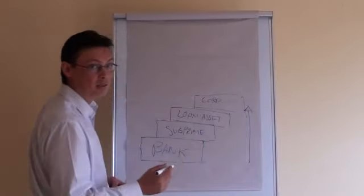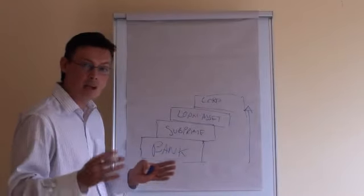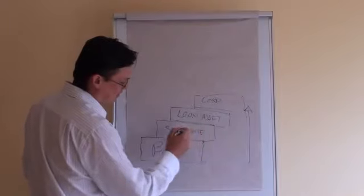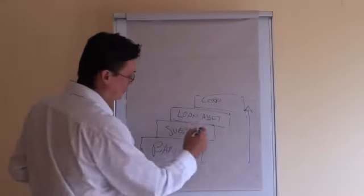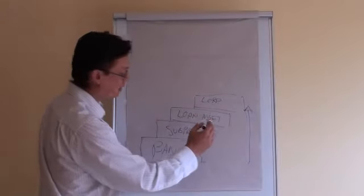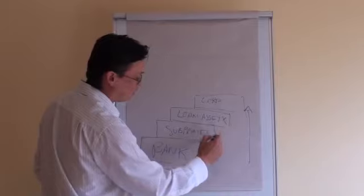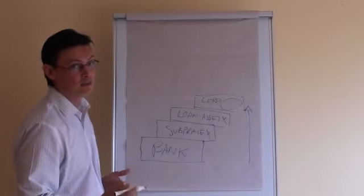So when the subprime was triggered, or when the dates were triggered where people actually had to pay the long term loan rates, they found out they actually couldn't afford them. So in effect, these subprime products were worth nothing. However, we've sold those subprime products as assets, so these were worth nothing. And the people holding the assets had lost their investment.